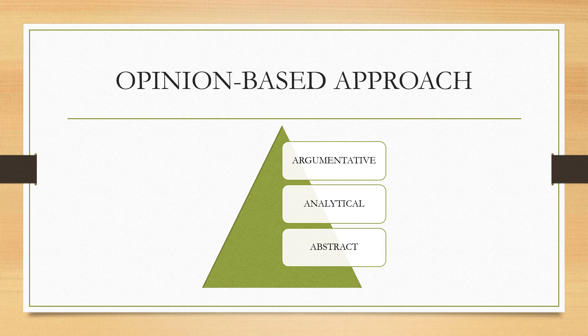The opinion-based approach is divided into three: argumentative, analytical, and abstract. An argumentative approach is a one-sided approach where the author gives his perspective towards a certain phenomenon — either in support of or against that phenomenon — but it is only a one-sided approach. An analytical approach means the author analyzes the pros and cons of a certain concept, maintains a neutral approach, and eventually concludes by balancing out both sides.